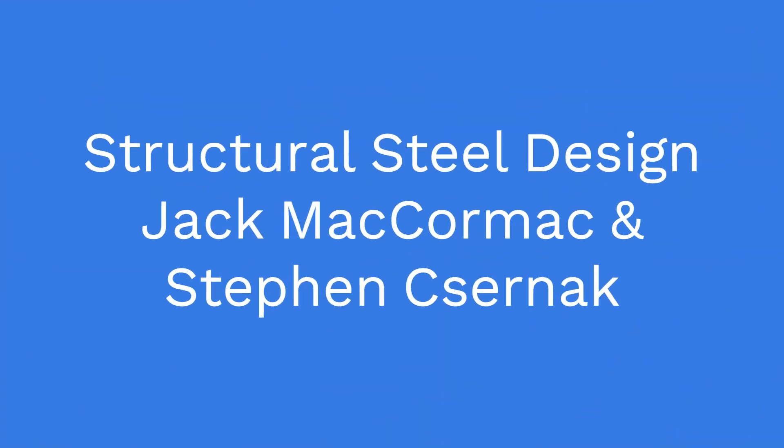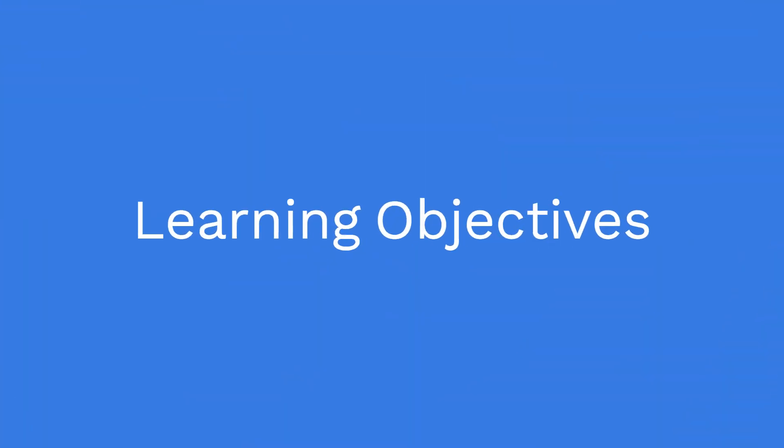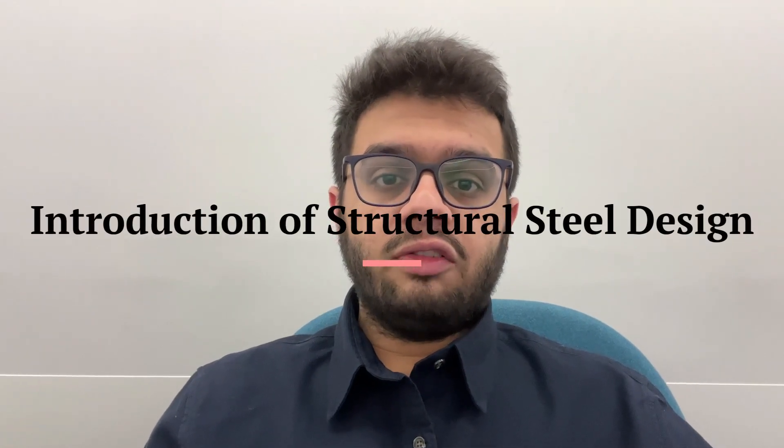The entire course will be referenced from the book 'Structural Steel Design' by Jack McCormack and Stephen Csernak. This part will deal with two major topics. We will start with the introduction of structural steel design, where we discuss its advantages and disadvantages, followed by its nomenclature and different steel sections. We will also discuss the stress-strain behavior of steel, Charpy notch test, economical design of steel structures, responsibilities of a structural designer, and many more core topics that will form a strong foundation for the course.